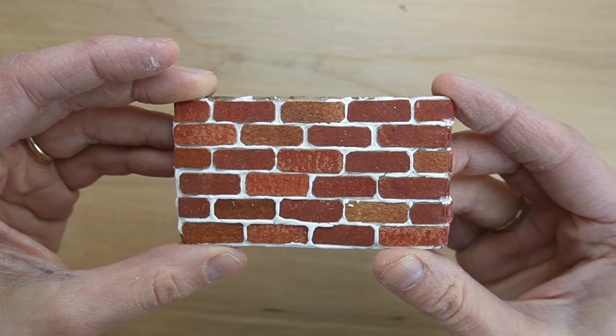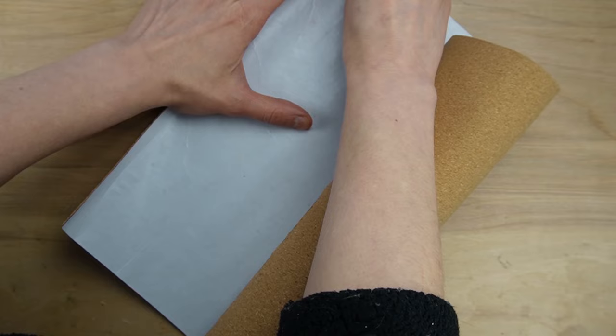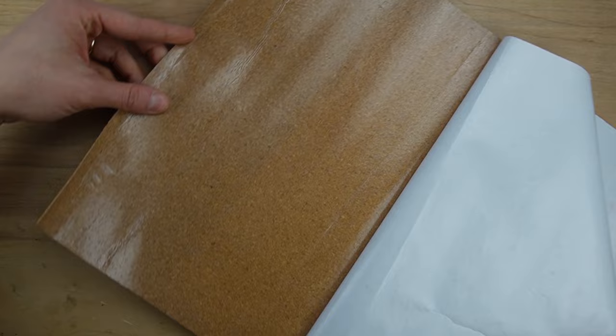I'm using thin adhesive backed cork from Amazon to make the bricks. The cork I'm using is like a big sticker backed with shiny paper. I'm covering up the adhesive backing and replacing the shiny paper with computer paper.